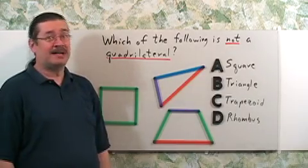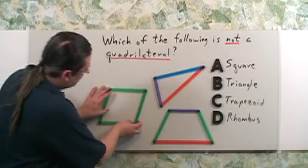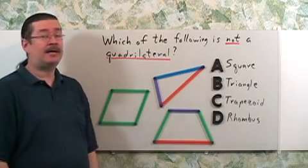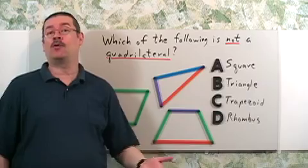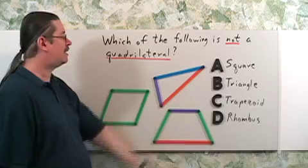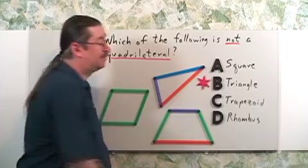Well, technically a square is a rhombus, but you could do this. Rhombus. You're asking which one is not a quadrilateral. Quadrilateral means four-sided figure. Which one of these does not have four sides? The triangle. The answer is B.